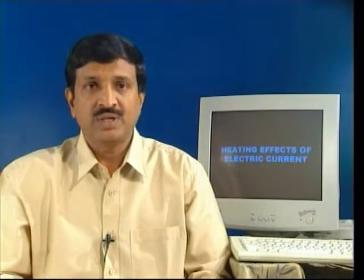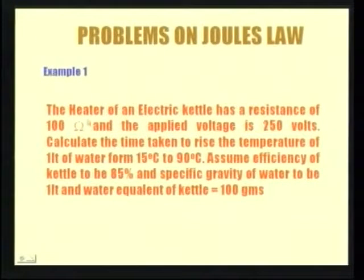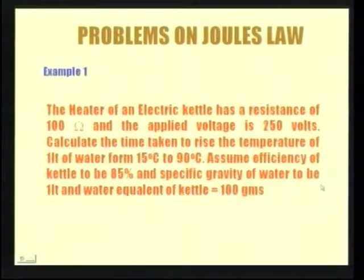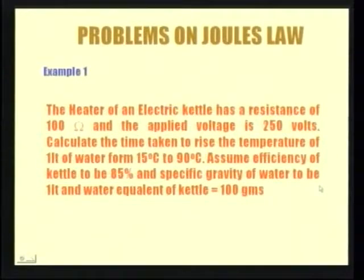We will solve some problems as examples based on Joule's law. First example: the heater of an electric kettle has a resistance of 100 ohms and the applied voltage is 250 volts. Calculate the time taken to raise the temperature of 1 liter of water from 15 degrees centigrade to 90 degrees centigrade. Assume the efficiency of the kettle to be 85 percent, specific gravity of water to be 1, and water equivalent of the kettle is equal to 100 grams.